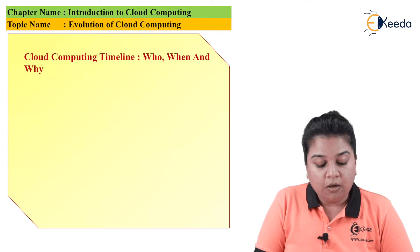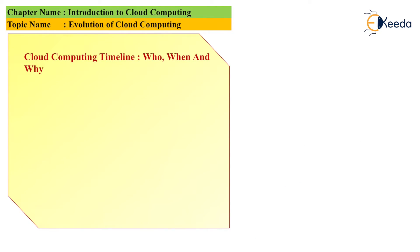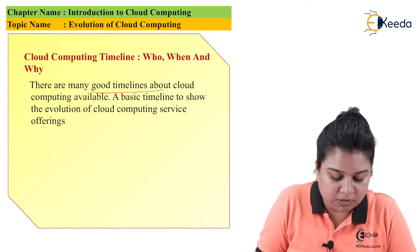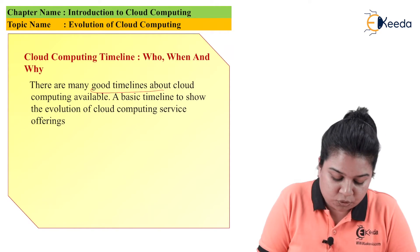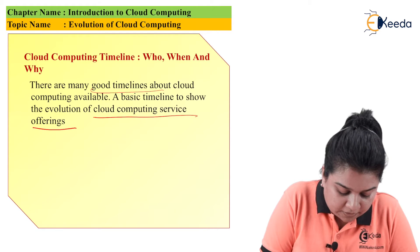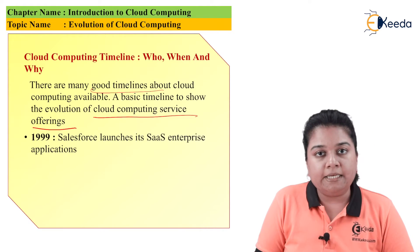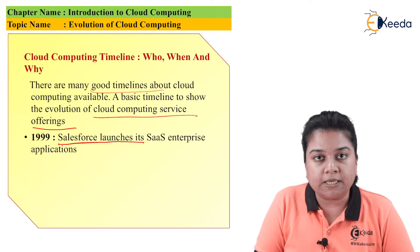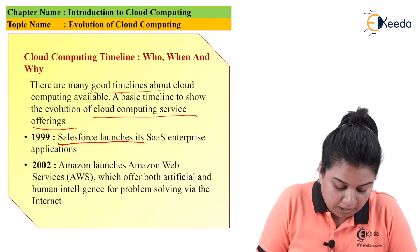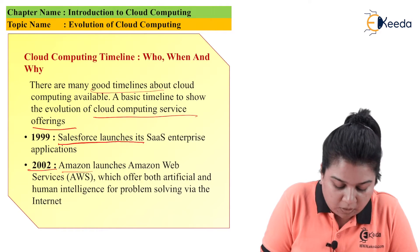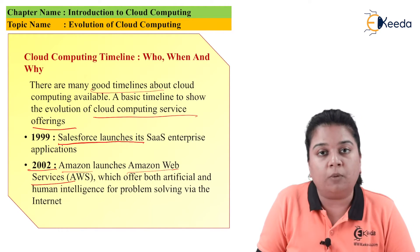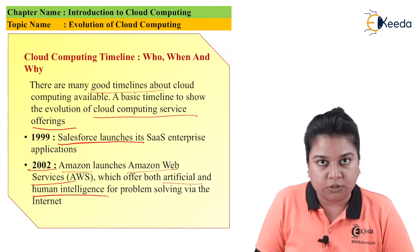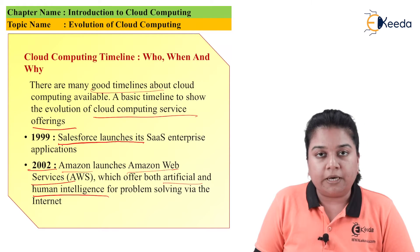Cloud Computing Timeline: Who, When, and Why? There are many good timelines about cloud computing availability. A basic timeline showing the evolution of cloud computing service offerings: In 1999, Salesforce launched its software as a service enterprise applications. In 2002, Amazon launched Amazon Web Services, commonly known as AWS, which offered both artificial and human intelligence for problem solving via the internet.